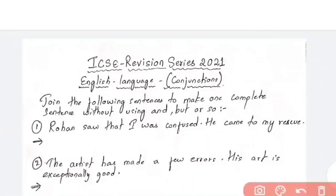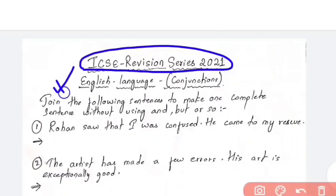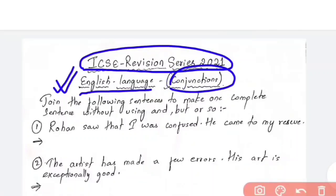This is our ICC Revision Series 2021, and this first video is on English language — specifically, the conjunctions part. What are conjunctions? Even in junior classes you study that a conjunction helps in joining two sentences. In ICC, you are given two sentences and you have to join them without using 'and', 'but', or 'so'.